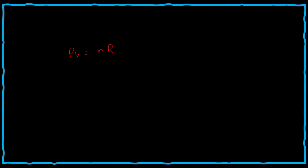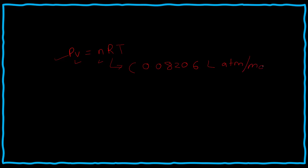The ideal gas law says that PV is equal to NRT. Here P is pressure, V is volume, N is number of moles, R is the universal gas constant — and I hope everyone remembers the value of R. It is 0.08206 liter·atm·mol⁻¹·K⁻¹. And T is temperature.